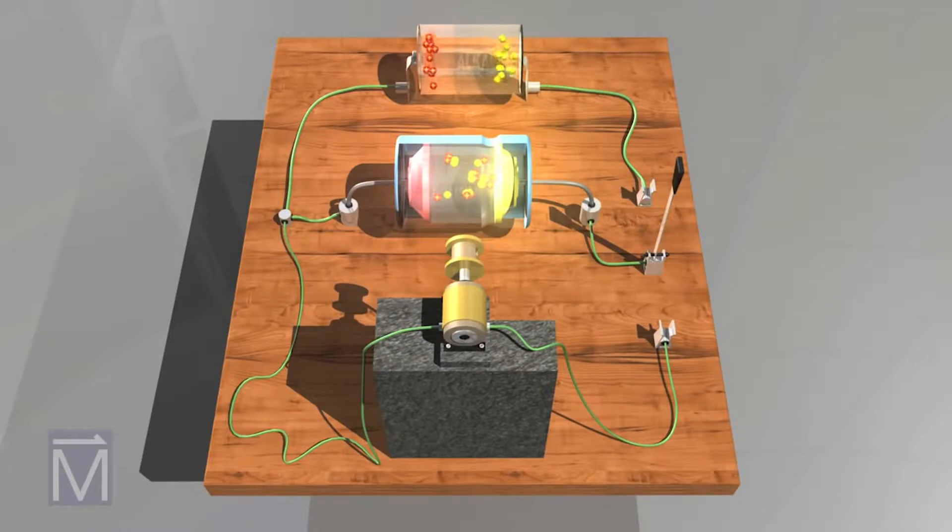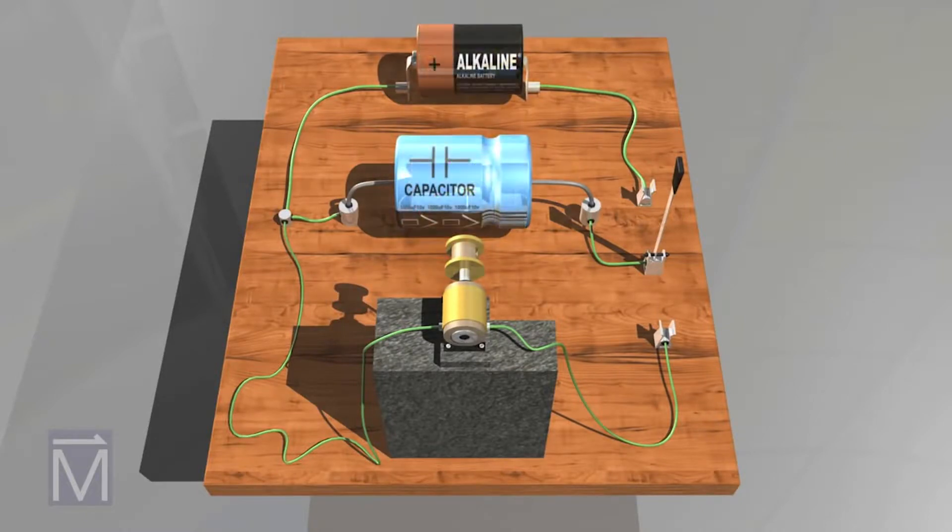However, capacitors can do things a battery can't, as we will show here. For the purposes of this animation, we'll focus on different parts of the current propagating through the wires at different times.